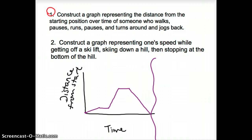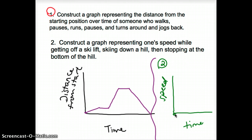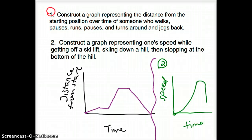For task two, construct a graph representing one's speed while getting off a ski lift, skiing downhill, and stopping at the bottom of the hill. This is not a distance-time graph — we're comparing time to speed. When someone first gets off a ski lift, they might pause or not be going fast at all. As they get going they get faster and faster. Near the bottom they might start to slow down just a little bit, and then they will very quickly come to a complete stop.